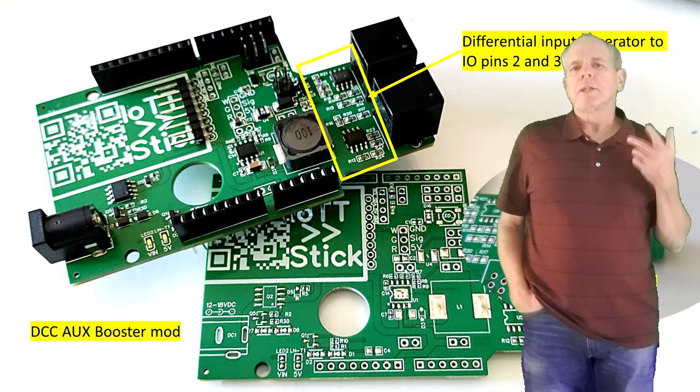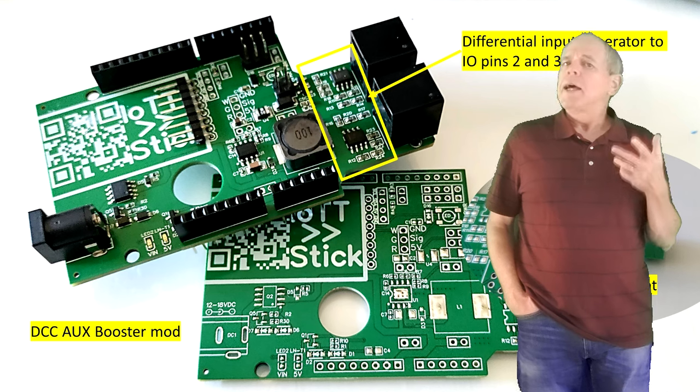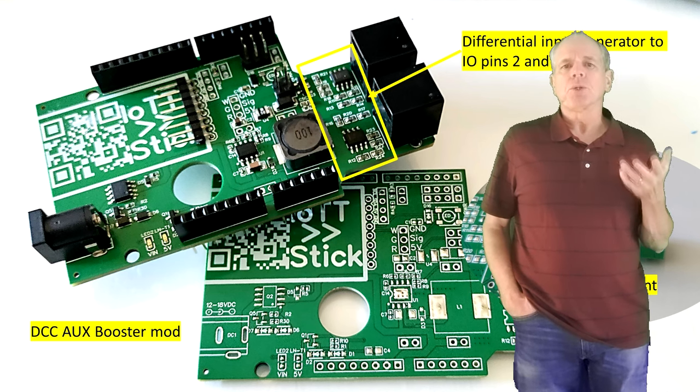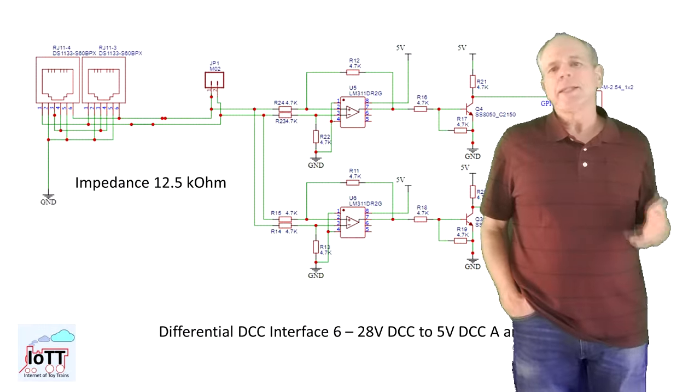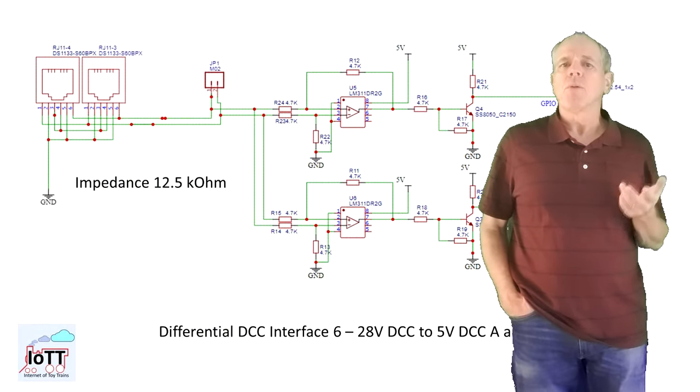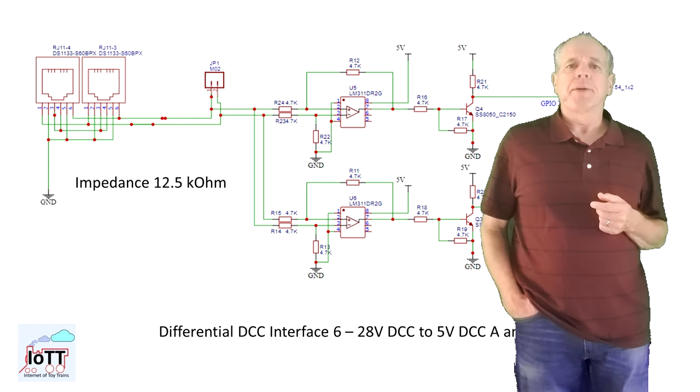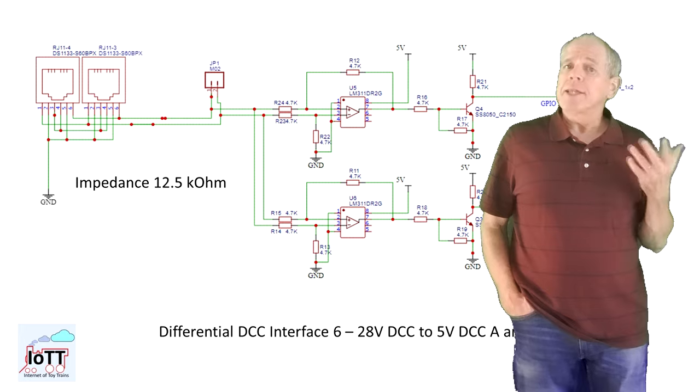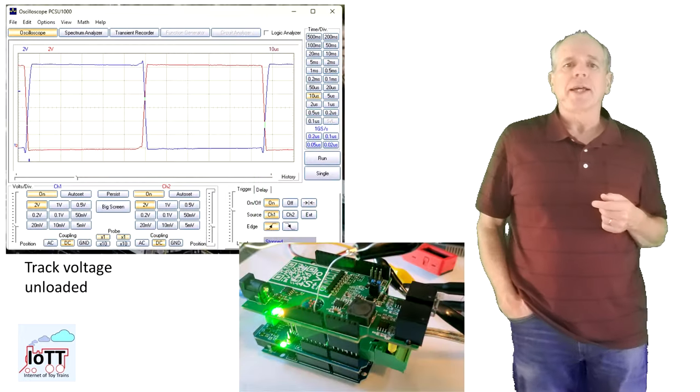In video number 128 I showed a modified version of the AUX shield and explained how it's used to connect the DCC input to the booster. I explained the advantages of using a differential input compared to an optocoupler which can introduce asymmetries to the signal timing. In the meantime I've tested the AUX shield and here are the screenshots of the track signal.